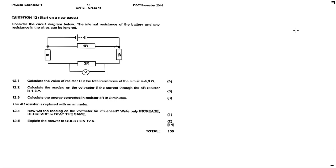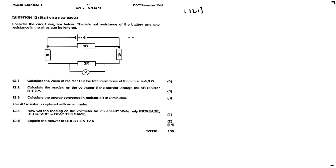12.1: Calculate the value of resistor R if the total resistance of the circuit is 4.8 ohms. We need to find the actual value for R. Now, 2R and 3R are connected in series, and against the 4R we have a parallel connection.